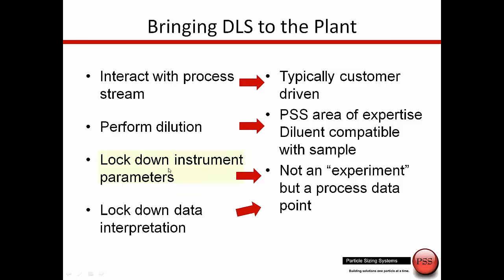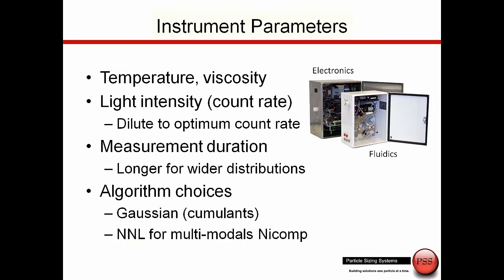When we're doing measurements in the plant, we kind of lock down all the instrument parameters, because this is no longer experimenting — this is turning into a process monitoring measurement. We lock down all of the parameters that could influence the result, and we also want to lock down the data interpretation, because typically we just want a single data point for process monitoring. The instrument parameters we want to control are temperature and viscosity. The light intensity, which is the count rate, we always want to optimize, because an optimum count rate gives us the best results with DLS. We don't use a neutral density filter with the online system, so we just control count rate by controlling dilution.